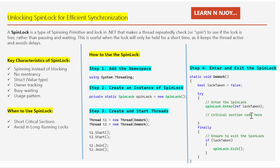The critical section placeholder is where code that should only be executed by one thread at a time is written, and the spin lock ensures no other thread can enter this section while it is locked. In the finally block, the spin lock is exited by calling the Exit method — but only if the lock was successfully acquired, checked via the lockTaken condition. This ensures the thread always releases the lock.